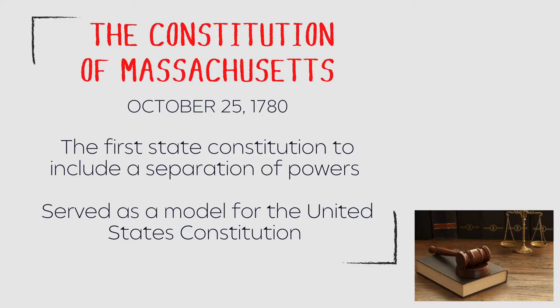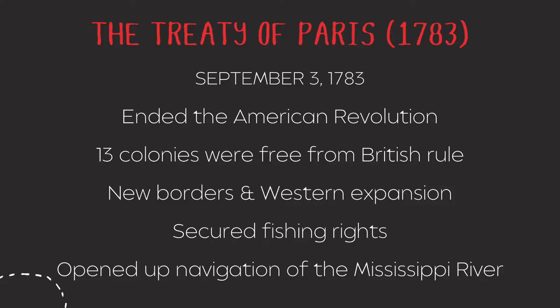The Constitution of Massachusetts was the first state constitution to include a separation of powers. Its structural framework is identical to that adopted in the United States Constitution, and includes the right of the people to set up whatever government will secure their safety, prosperity, and happiness. We also see other important aspects shared with the US Constitution, such as protections against search and seizure, self-incrimination, confrontation of witnesses, and cruel and unusual punishment.